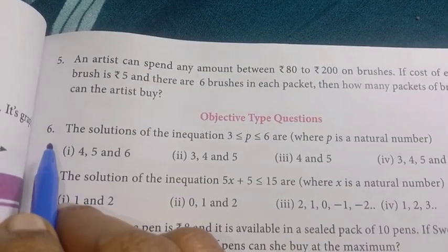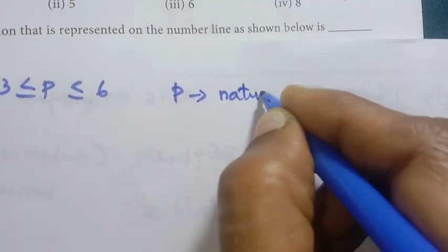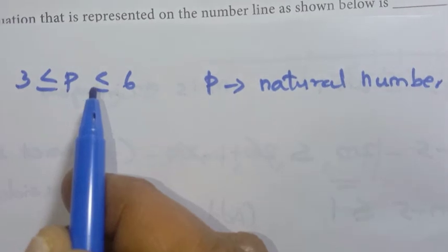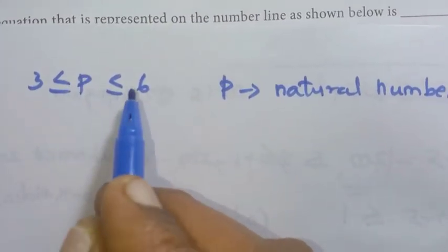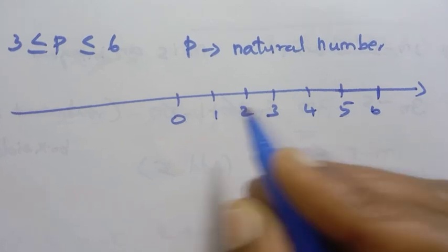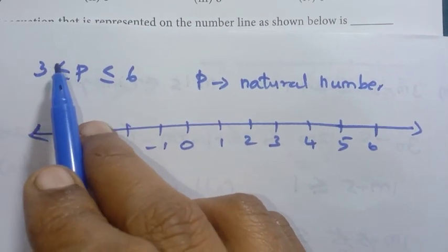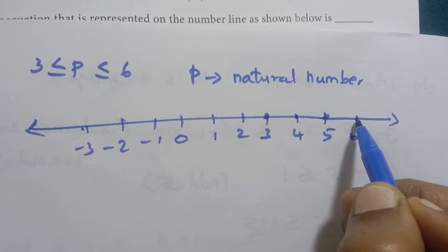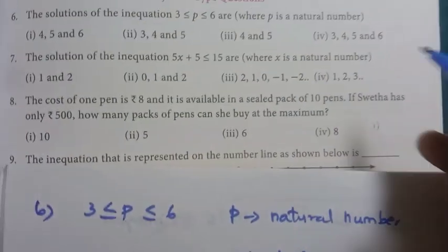6th objective question: The solutions of the inequation 3 less than or equal to p less than or equal to 6, where p is a natural number. Natural numbers on the number line: 1, 2, 3, 4, 5, 6. Since 3 is less than or equal to p, the values are 3, 4, 5, 6. So the answer is the fourth option: {3, 4, 5, 6}.